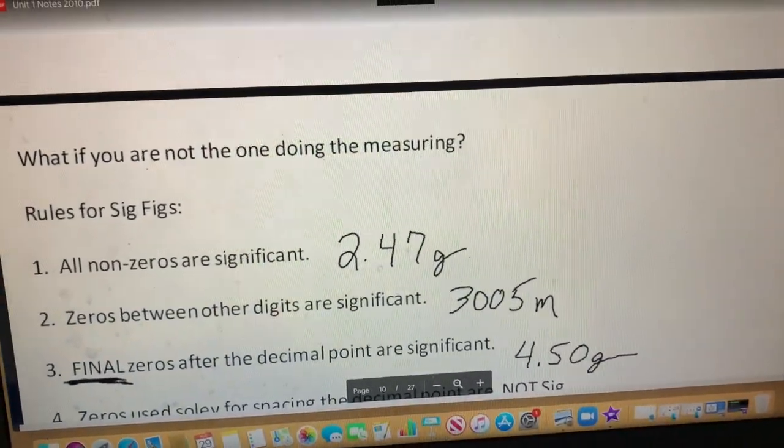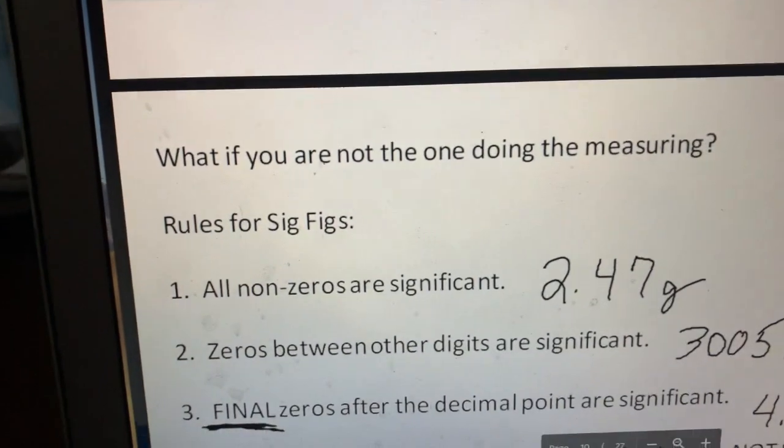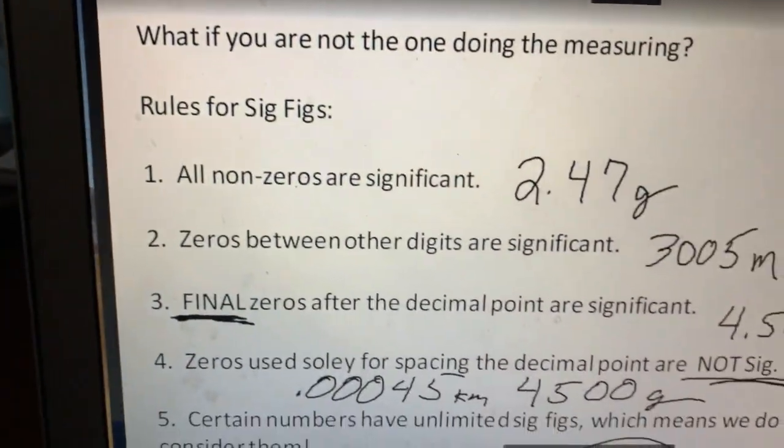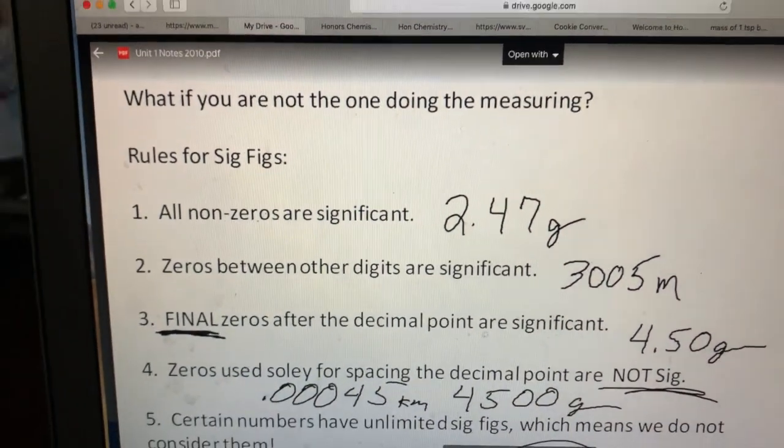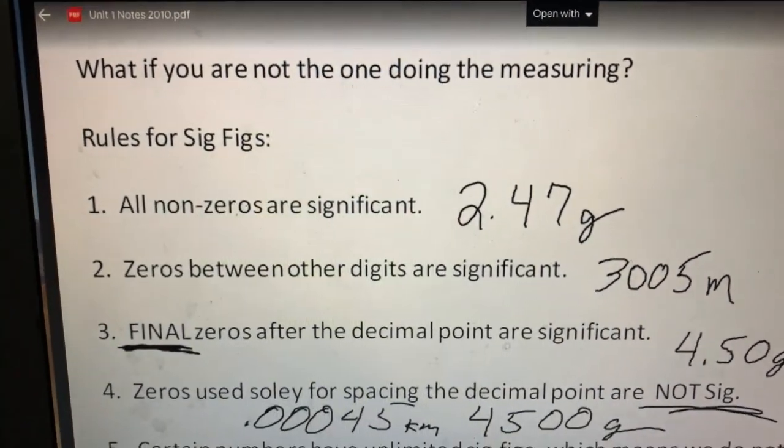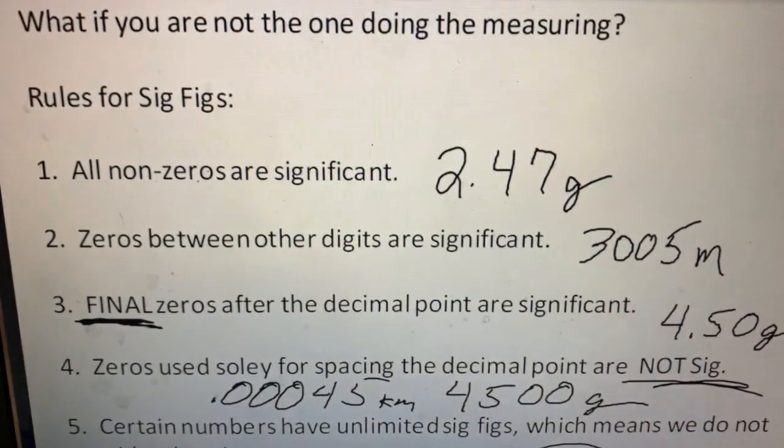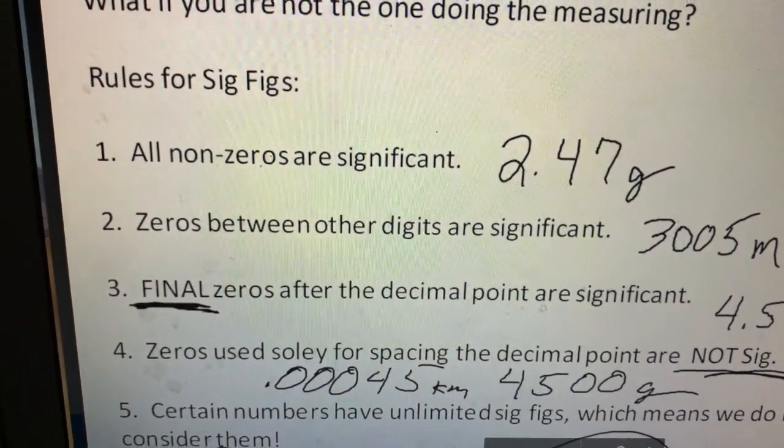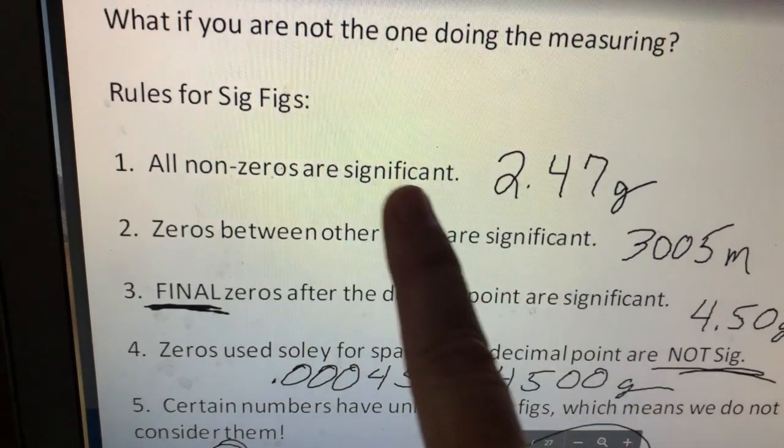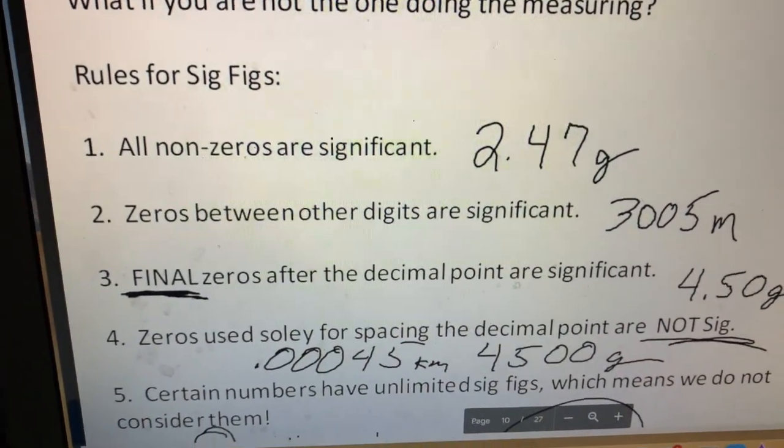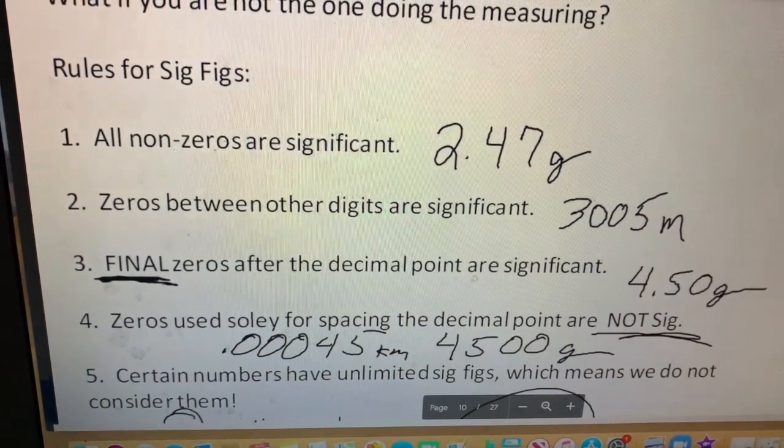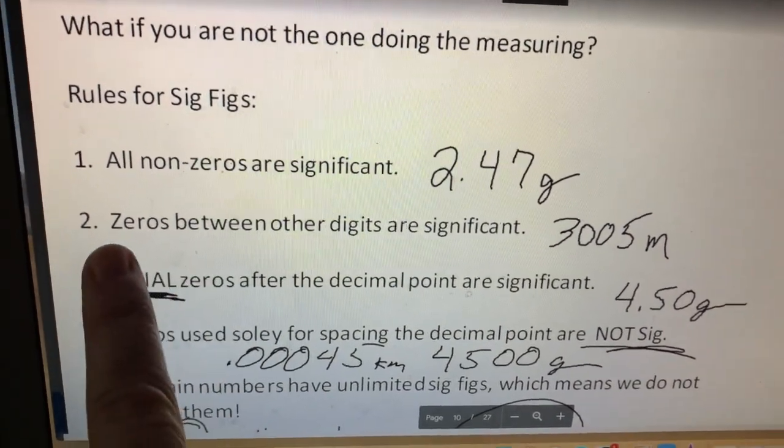Let's go over very quickly these rules. If you're not the one doing the measurement, you're going to have to look at numbers and determine how many significant figures there are. All non-zeros are significant. So if I were to give you the number 2.47 grams and ask you how many significant figures there are, you would tell me three. No question.